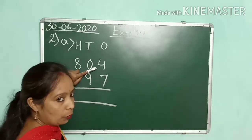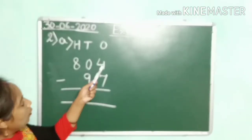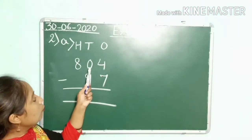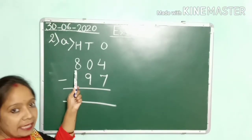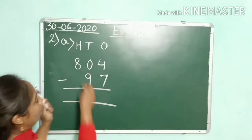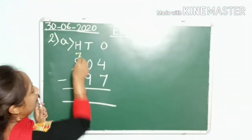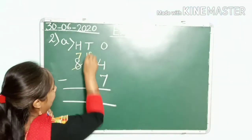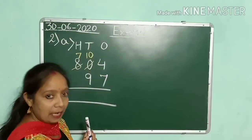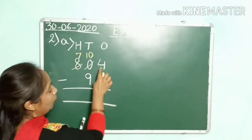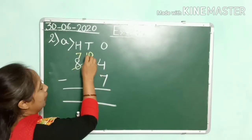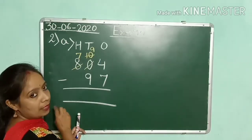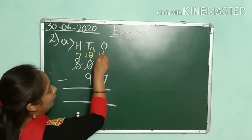So we need to borrow. 4 will borrow from 0, but 0 is already 0. So 0 will borrow from 8 — our 8 becomes 7 and this 0 will become 10. Now 4 will borrow from this 10, so 10 becomes 9 and this 4 becomes 14.